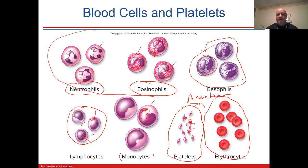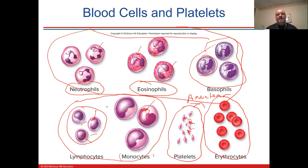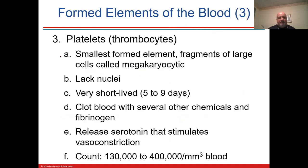Platelets are fragmented cells originally called megakaryocytes, which had a nucleus. Then suddenly they eject the nucleus and become fragmented thrombocytes — 'thrombo' meaning clot. The megakaryocyte has the nucleus, but the thrombocytes are anuclear. Platelets live a much shorter duration than red blood cells.